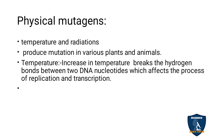The first physical mutagenic agent is temperature. An increase in temperature causes the hydrogen bonds in DNA nucleotides to break, which affects the replication and transcription process in the genetic material.